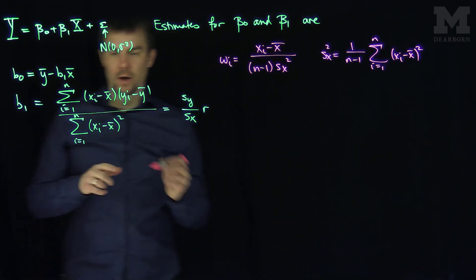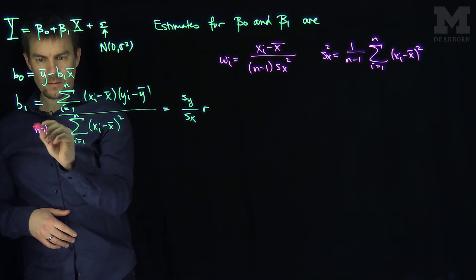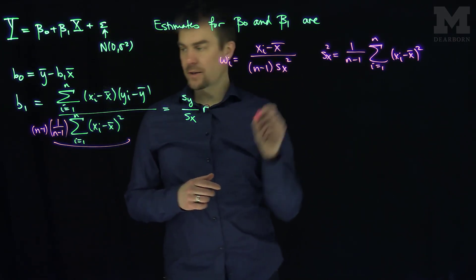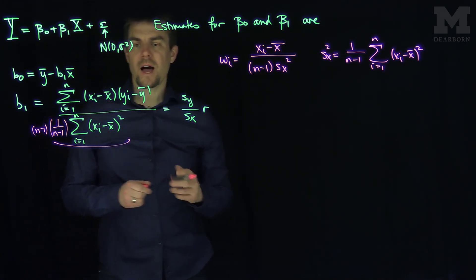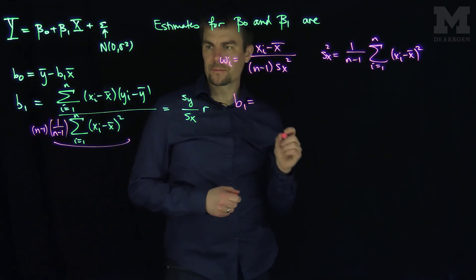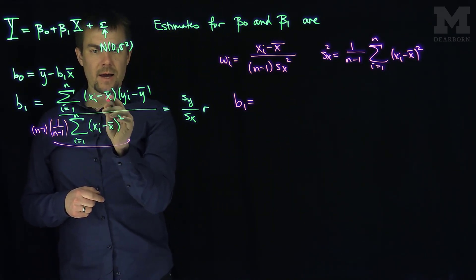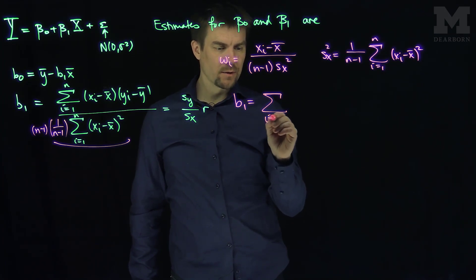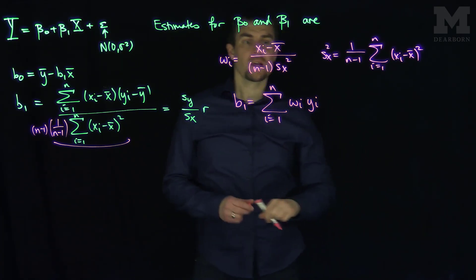With these weights, if I insert a factor of 1 over (n minus 1) in the numerator and denominator, the denominator becomes sₓ squared. Crucially, summing (xᵢ minus x-bar) against y-bar gives zero, so b1 equals the sum from i equals 1 to n of wᵢ yᵢ, where the weights wᵢ depend only on x.